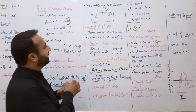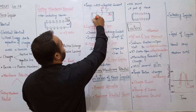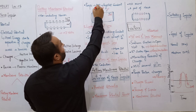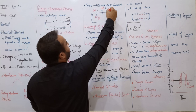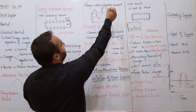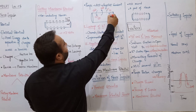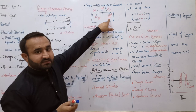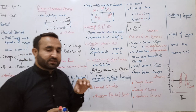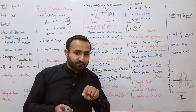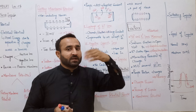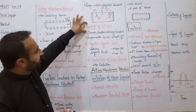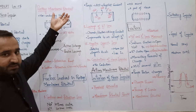مثال کے طور پر اندر 10 sodium ions ہوں تو باہر 100 sodium ions ہوں گے۔ اندر ایک potassium ion ہو تو اندر 20 potassium ions ہوں گے۔ Total باہر 101 اور اندر 30 - اس لیے confuse نہیں ہونا: sodium 10 times inner سے outer میں زیادہ ہے، potassium 20 times outer سے inner میں زیادہ ہے۔